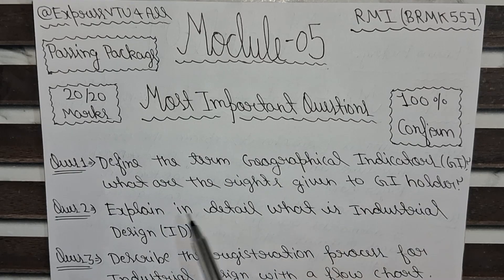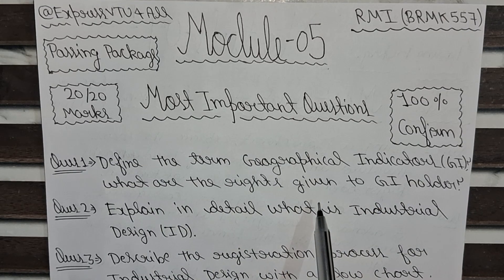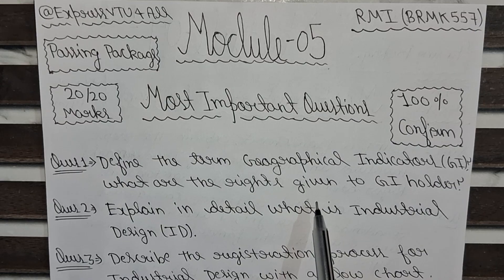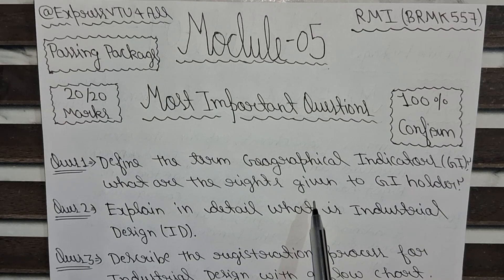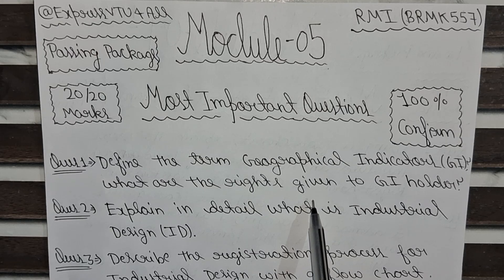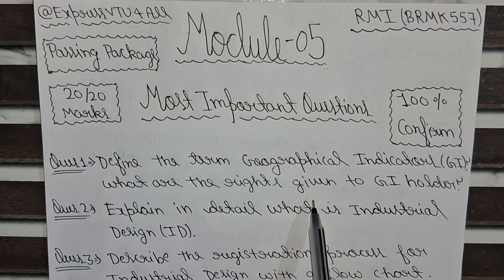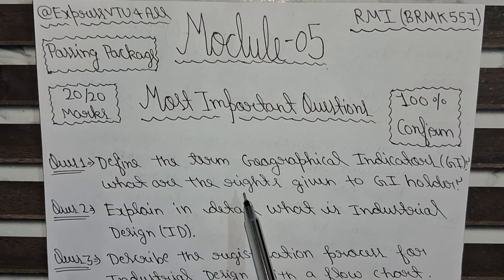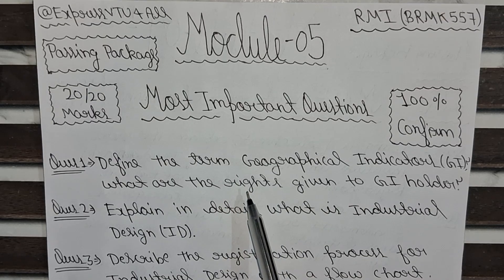Our first question is: define the term Geographical Indication (GI) — what are the rights given to the GI holder? This question explains what a geographical indication is, and we also discuss the rights granted to GI holders, such as the right to use, license, and take legal action.